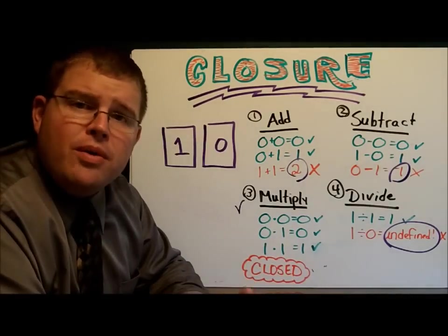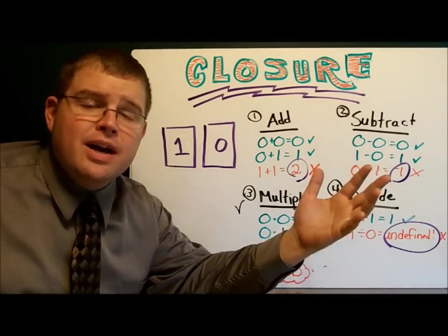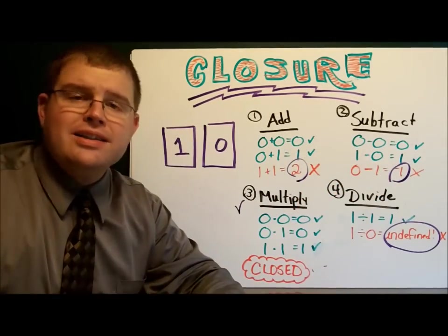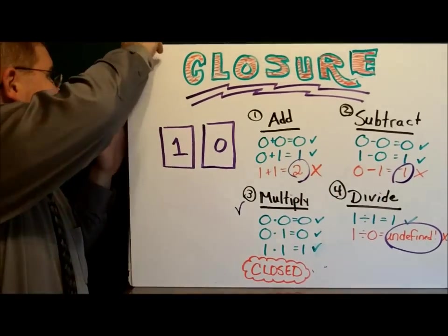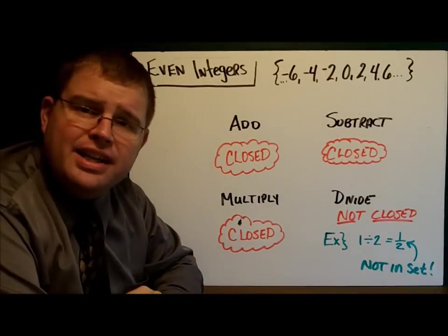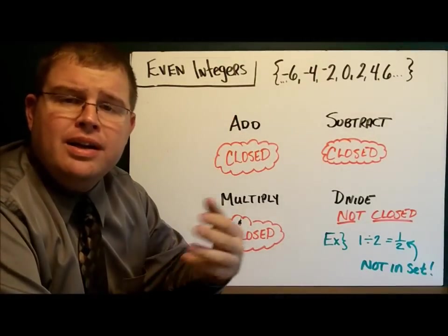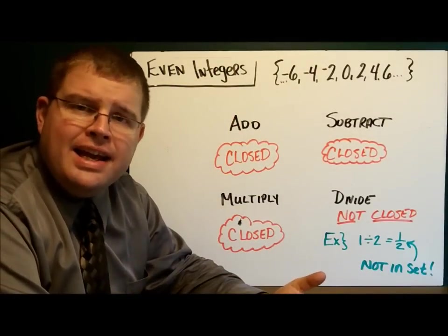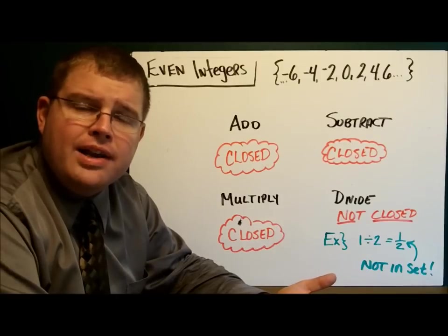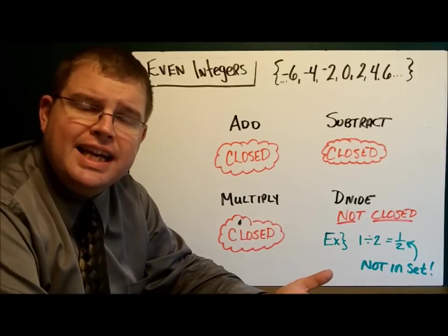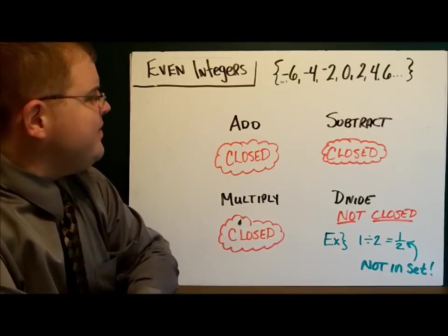But wouldn't it be more exciting if we had a bigger set of numbers? You're in luck. Take a look at this. Here I have the set of even integers. For example, negative 10, negative 8, negative 6, negative 4, negative 2, 0, 2, 4, 6, 8, 10. The even integers.